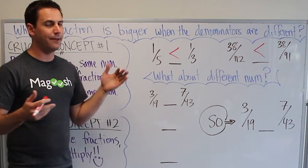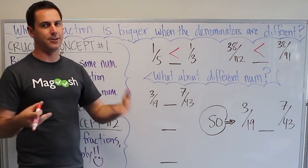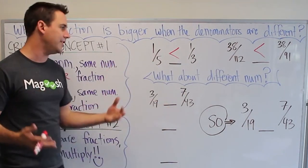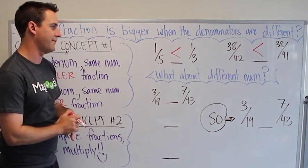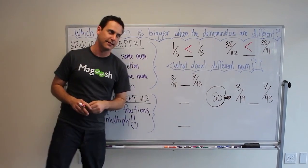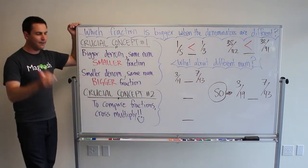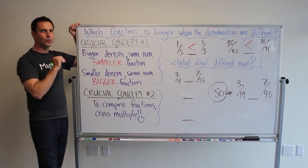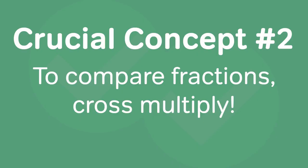But often times we have fractions where the numerator is different and the denominator is different. So what do you do in these cases? Our second crucial concept of the day: to compare fractions, just cross multiply. Simple as that — to compare fractions, cross multiply.